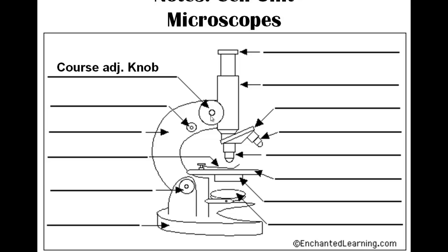These knobs are for focus. We have what's called a coarse adjustment focus knob, which is for moving the tube up and down fairly quickly — hopefully never driving it through the slide on the stage — to get it into focus. Then once you get it close to focus, you use the fine control knob, which gives you more fine control.